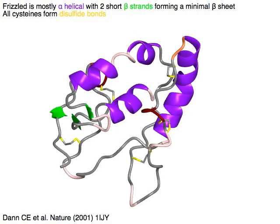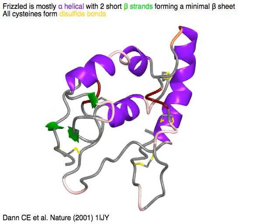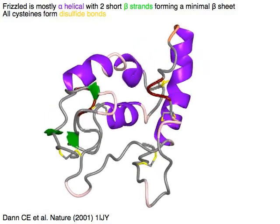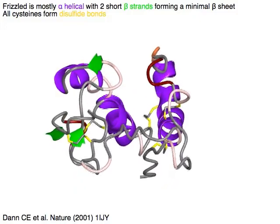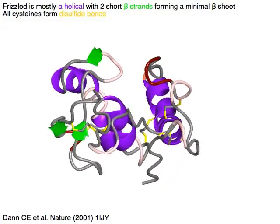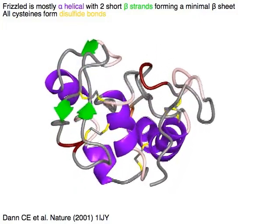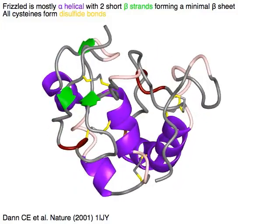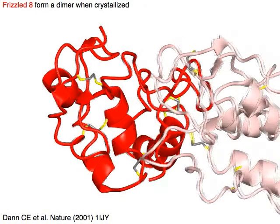The extracellular domain of Frizzled is mostly alpha-helical in purple, with two short beta strands in green forming a minimal beta sheet. All cysteines form disulfide bonds in yellow. Frizzled 8 forms a dimer when crystallized.